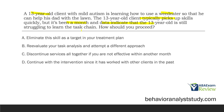We're always looking for the best answer. A: eliminate the skill as a target in your treatment plan. Well, the skill is still socially valid, still meaningful — we still need to teach it. We just likely need to teach it in a different way because it's not working as planned. B: reevaluate your task analysis and attempt a different approach. Ongoing evaluation shows it's been a full month, nothing's improving, and they're struggling with the task chain. Let's go back one step to the task analysis and try a different approach.